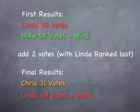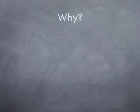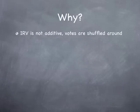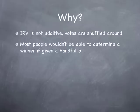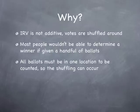You can just imagine the outcry from the citizens and the press after this happened. But why did it happen? Well, instant runoff voting is not additive. The votes are shuffled around. Although you vote 1, 2, 3, you just can't count the ballots 1, 2, 3. Most people wouldn't be able to determine a winner if they were given a handful of ballots. All ballots must be brought from the precincts to a central location before any of the shuffling can occur. You have to count all the ballots before any shuffling, and all ballots must be present and accounted for.